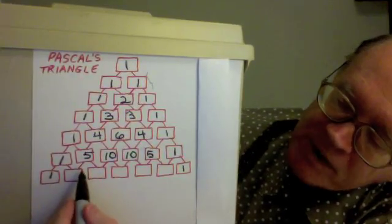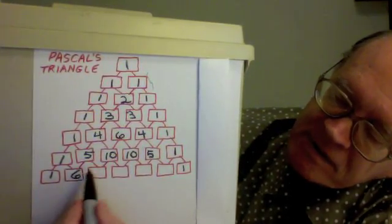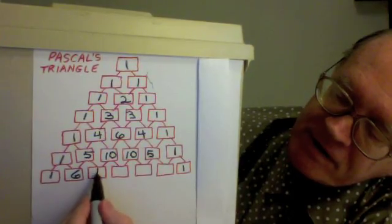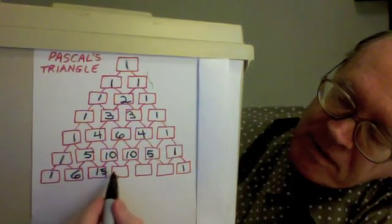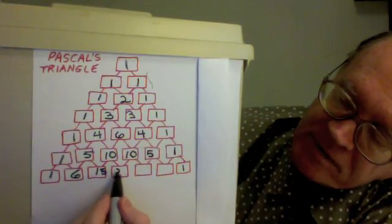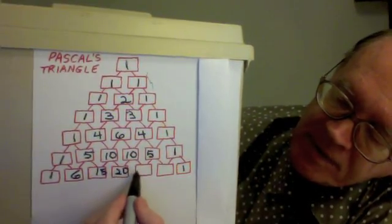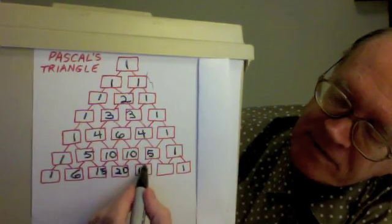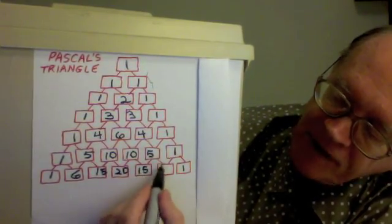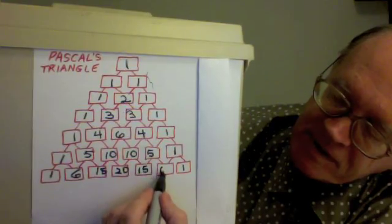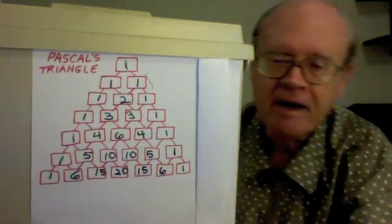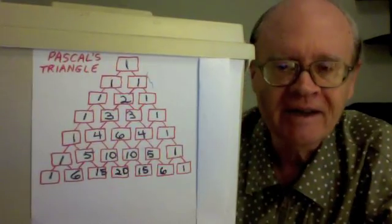Next row, one plus five is six, five plus ten is fifteen, ten plus ten is twenty, ten plus five is fifteen, five plus one is six. And so on indefinitely.